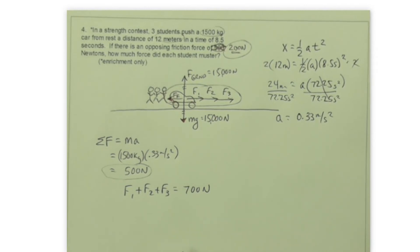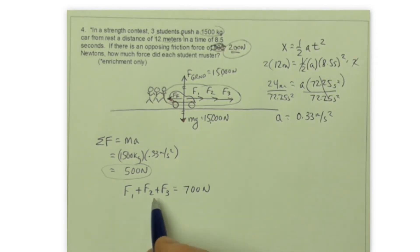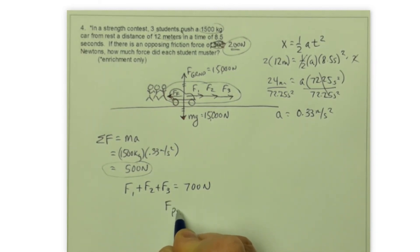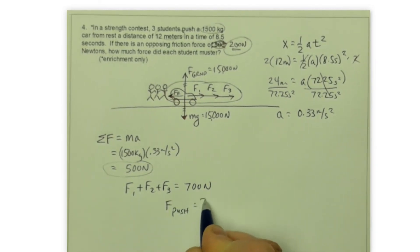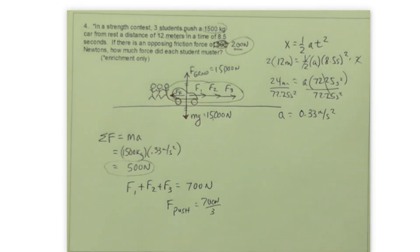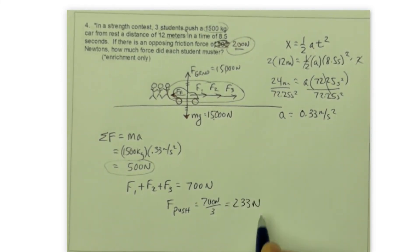Now if I want to determine what each person pushed with, if I assume all of those are the same, then the force of the push from each student would just be 700 newtons divided by 3. I'm going to use that calculator again for that. And I get that that's about 233 newtons each.